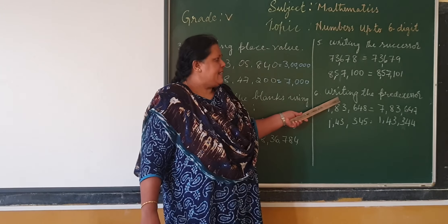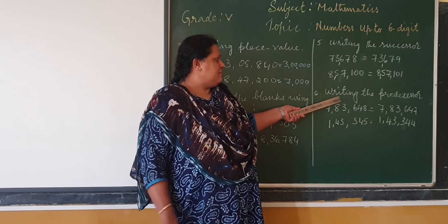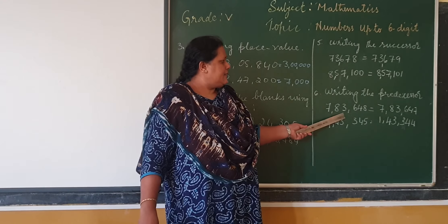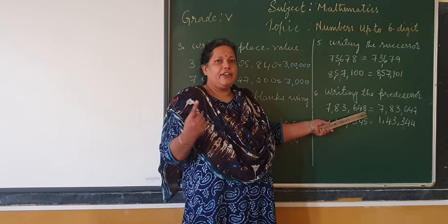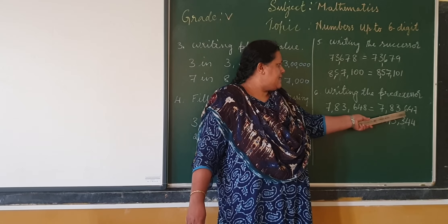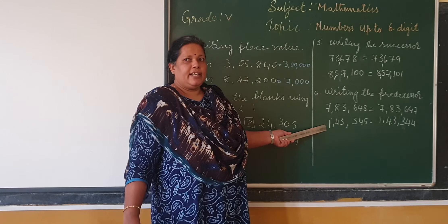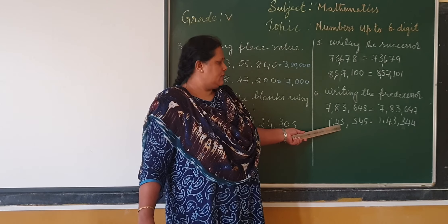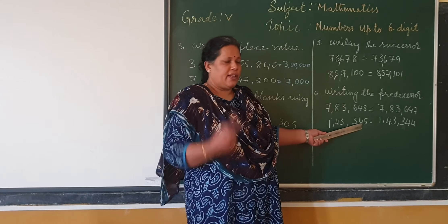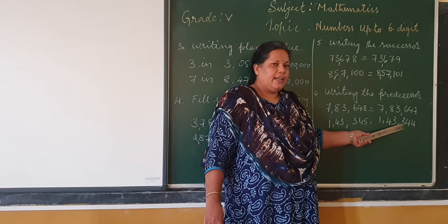Now move on to predecessor. You will learn that predecessor means subtracting 1 from a number to get the previous number. So here the number is 7,03,648. If you reduce one from this number, it becomes 7,03,647. One more example for predecessor: the number is 1,00,43,345. Subtract one from this number and you will get 1,00,43,344.